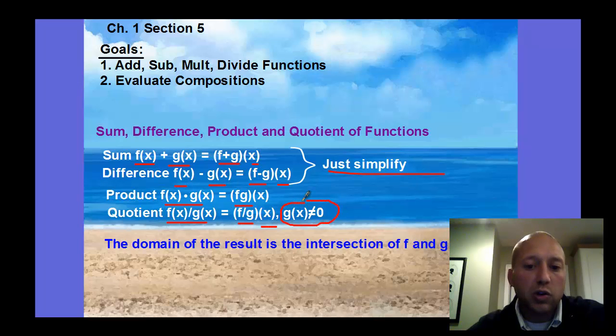And again, we have to be careful with the real state of domains, where g(x), our denominator, cannot be zero. The domain of the result is the intersection of f and g. Just find the domain of the result.